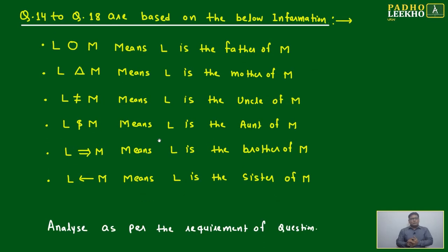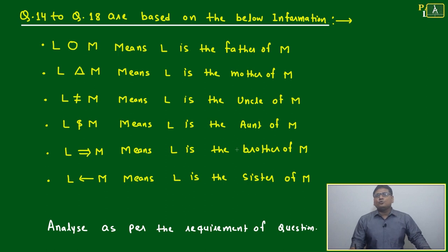Now we will cover one more case that will be based on coding, decoding, or some notation. Based on that, we have to do the decoding. The question has given: L circle M means L is the father of M. L triangle M means L is the mother of M.